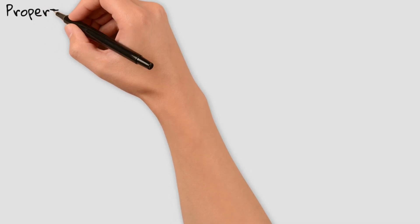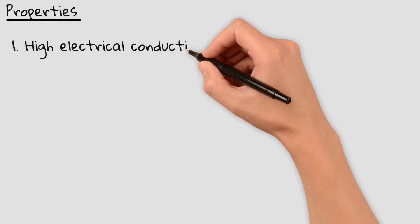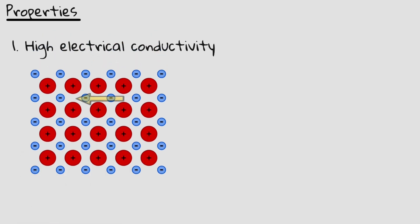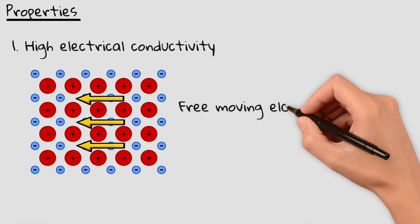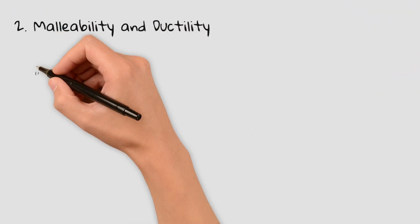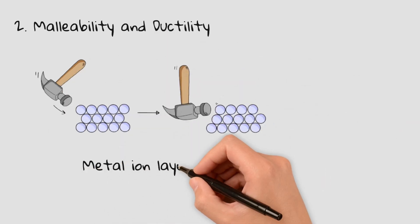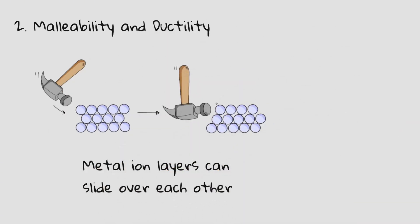This special bonding structure explains why metals have these three important properties. First, high electrical conductivity: the free-moving electrons allow metals to conduct electricity and heat easily, which is why copper is used in electrical wiring. Second, malleability and ductility: metals can be bent, shaped and stretched without breaking. Their positive ions are arranged in layers that can slide over each other while still being held together by the sea of electrons.